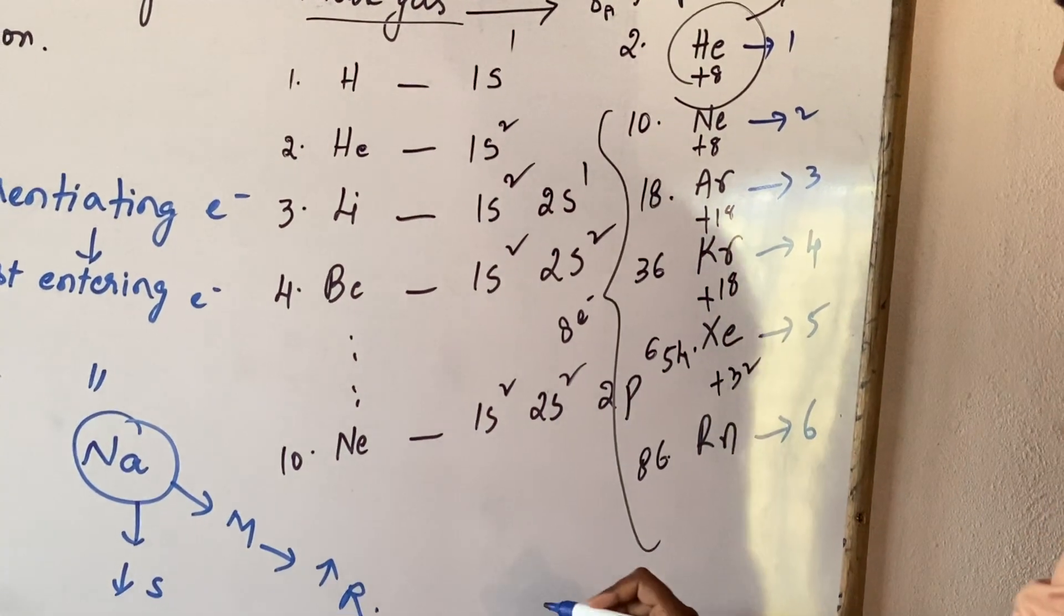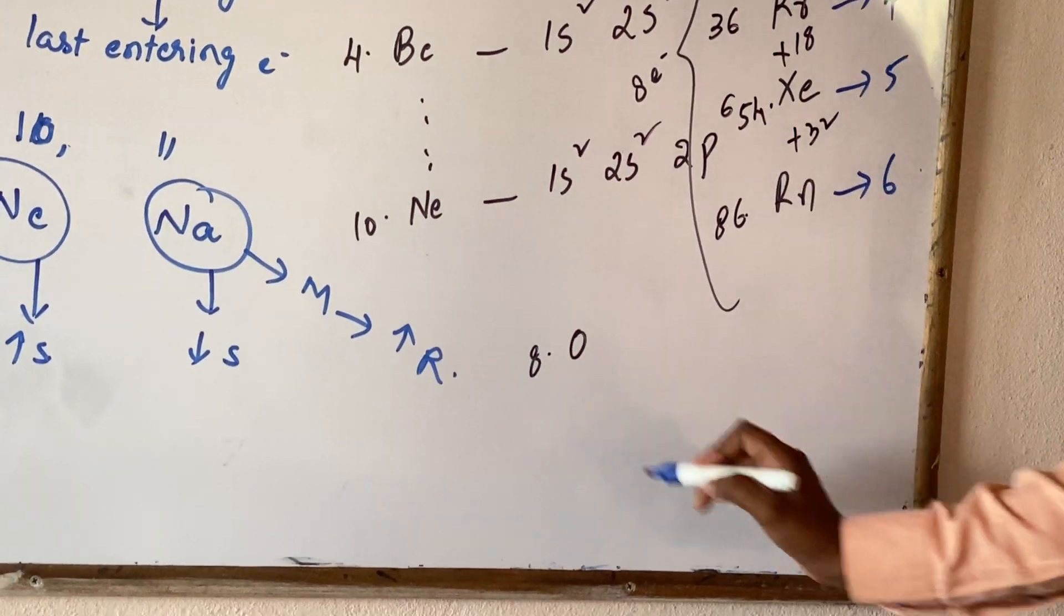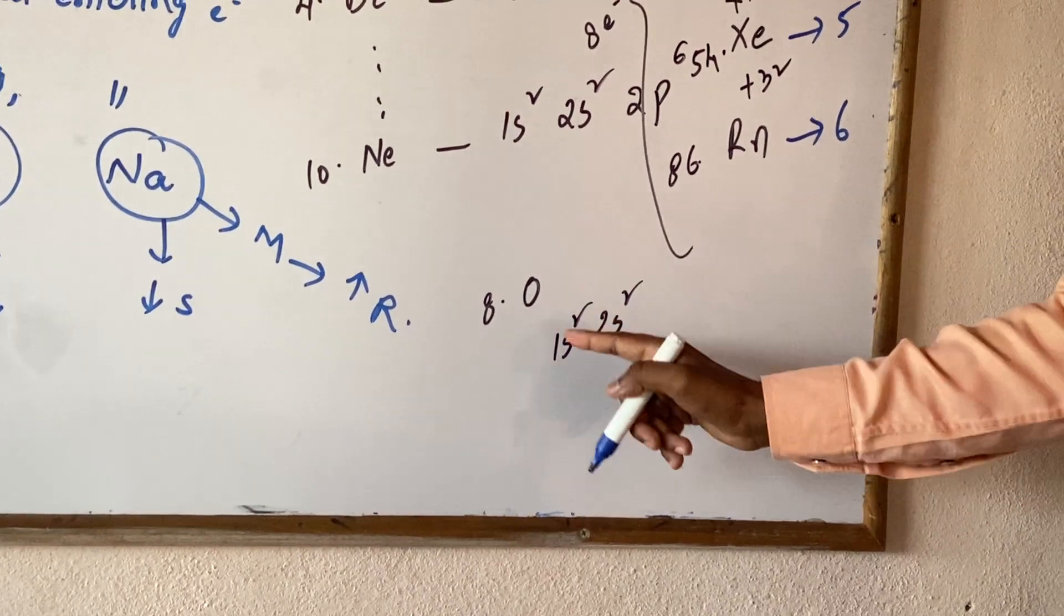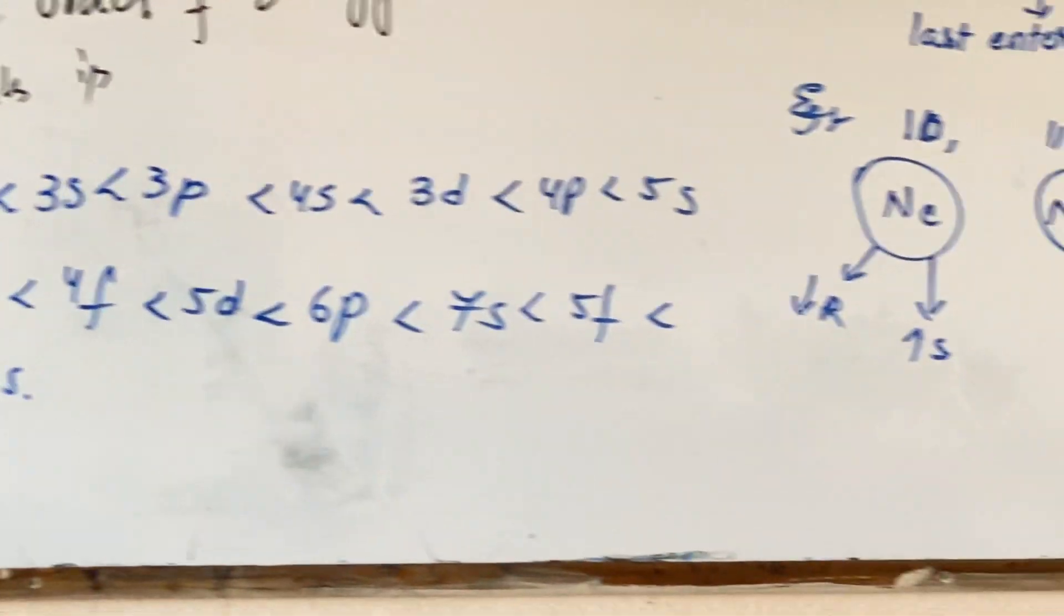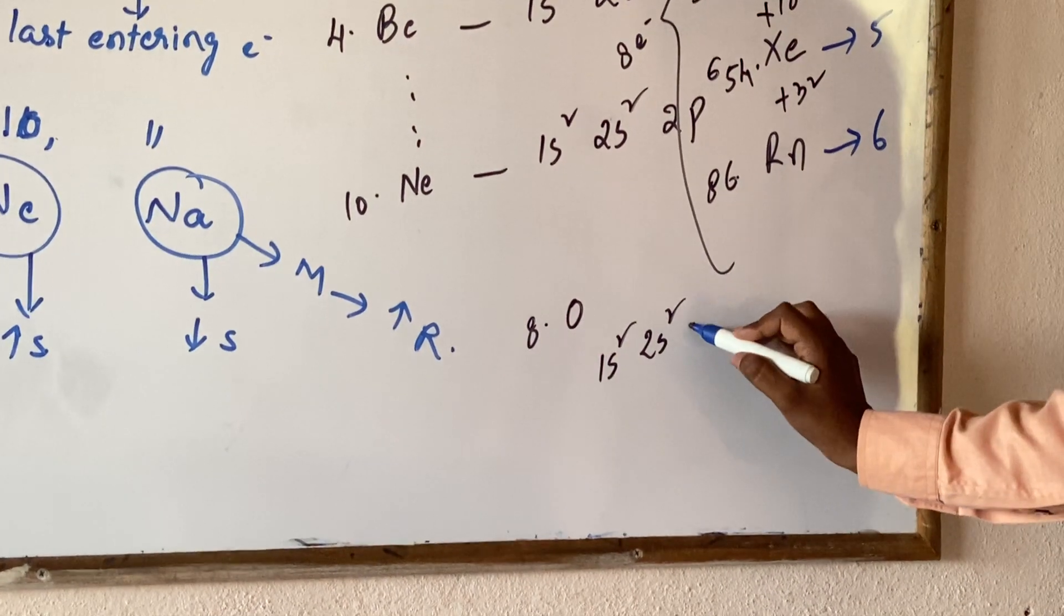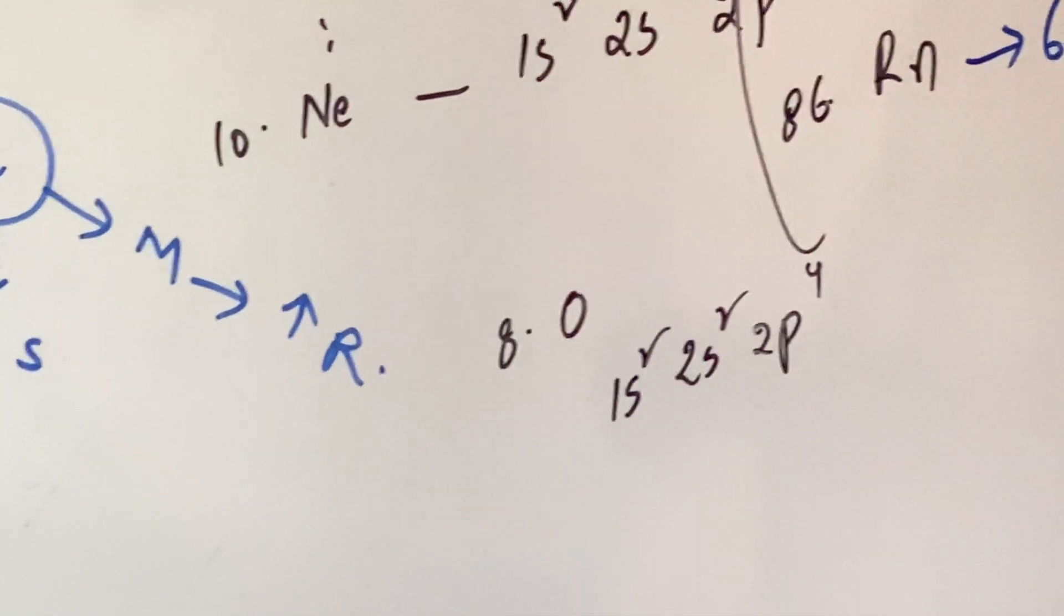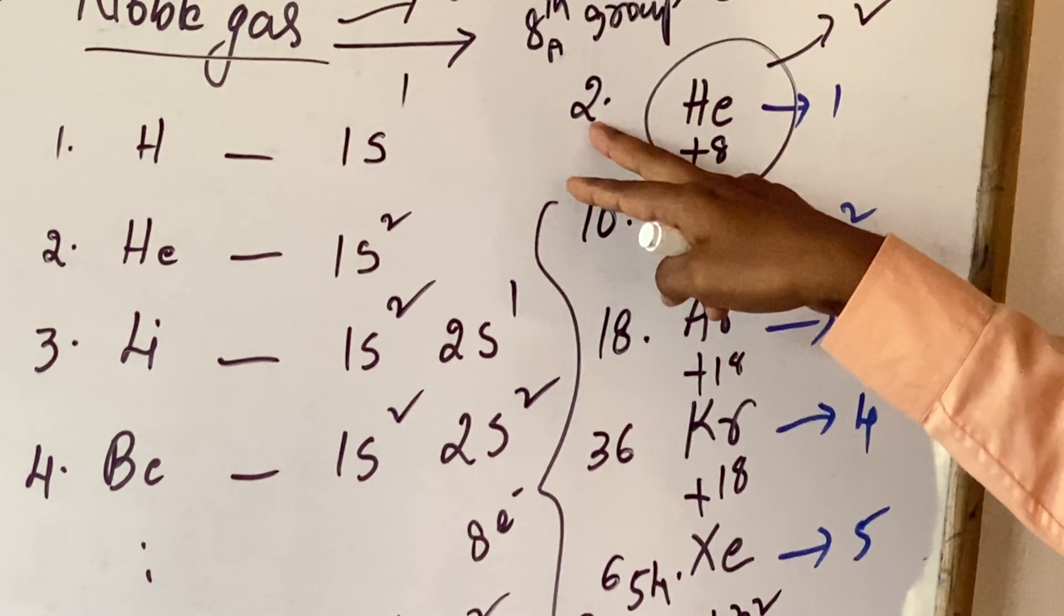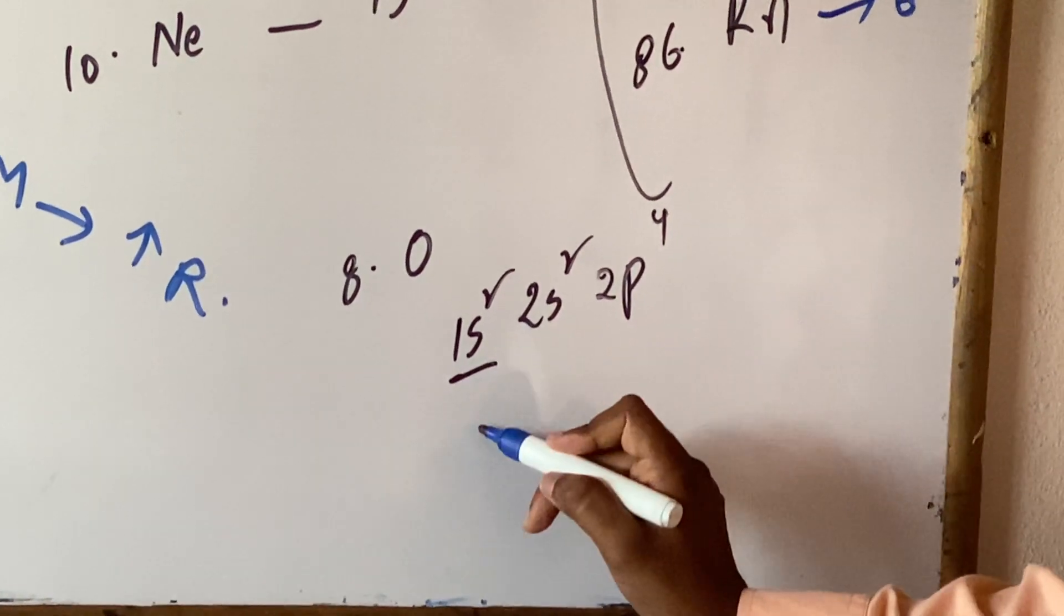And now, while writing the lowest configuration of 8th element, that is oxygen, 1s2, 2s2, what is the next orbital here? 2p. Now, available electrons, 4 completed, 8 minus 4, 4, remaining 4 electrons can enter into 2p. Now, 8 is in between 2 and 10. That's why noble gas configuration helium can be considered for oxygen. Now, in place of 1s2, we are taking here helium, helium after 2s2, 2p4.